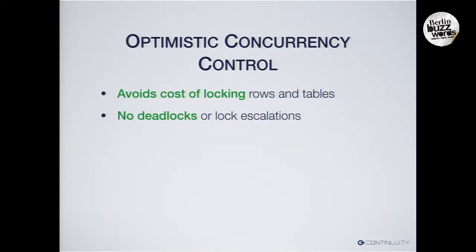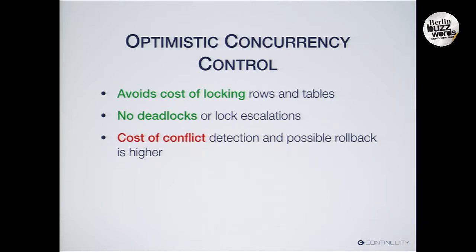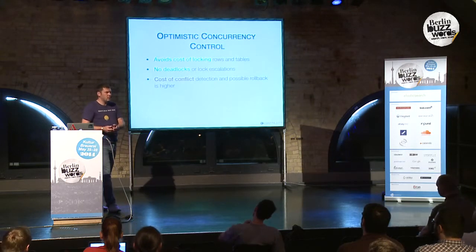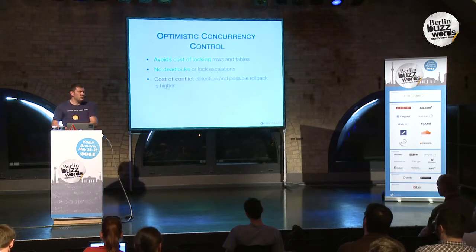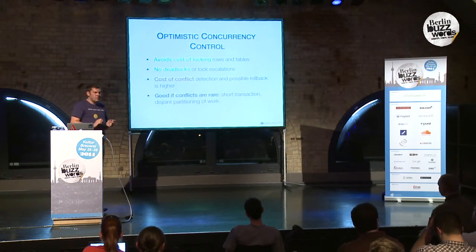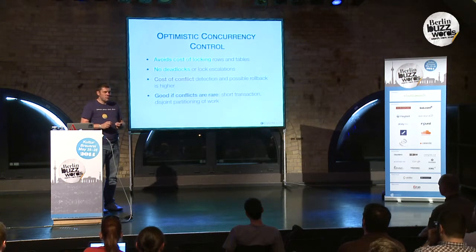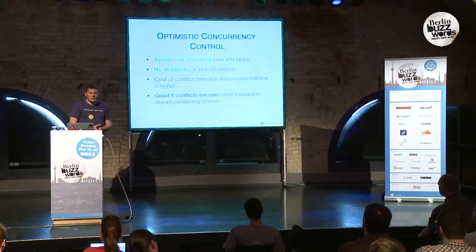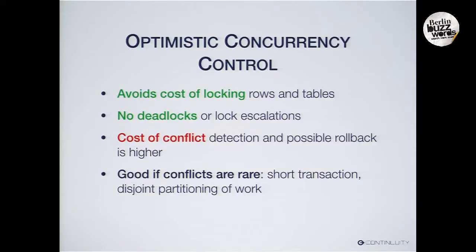By avoiding locking, we also avoid deadlocks — deadlocks can never happen. Of course there's a cost: the cost of conflict detection, and in the case of a conflict, the cost of rollback. This cost is higher than in a traditional database. But we chose optimistic concurrency control because if conflicts are rare, it costs almost nothing. If you think about how you write a distributed application, you partition the work into buckets and send that to different processes. If you do that partitioning smartly — partitioning your key space and work in the same way — you can avoid conflicts entirely.